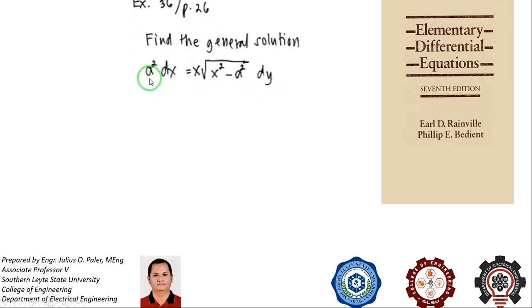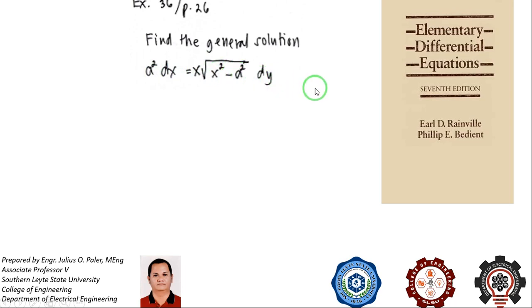The equation is a squared dx is equal to x times the quantity x squared minus a squared dy. Our variables here are x and y, and a is assumed to be constant.